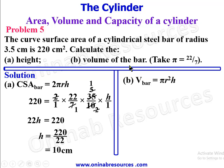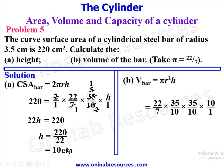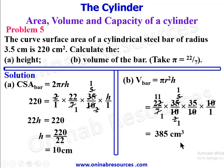Volume of the bar = πr²h = (22/7) × (35/10) × (35/10) × 10. The 10s cancel, 7 cancels into 35 giving 5, 5 cancels into 10 giving 2, 2 cancels into 22 giving 11. So 35 × 11 = 385 cubic centimeters, the volume of the cylindrical steel bar.